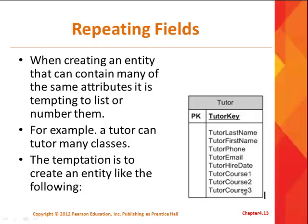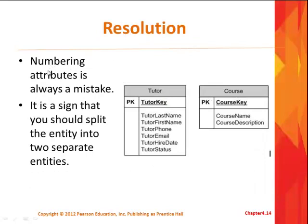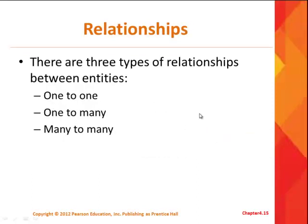It's tempting to do that, but let's say a tutor tutored in three courses — it might work for them. But what if they only tutored in one course? Then two fields would be null or blank, wasting space. Or what if a tutor could tutor in ten courses — would you add seven more attributes? That's not a good idea. Numbering attributes is always a mistake; it leads to bad design. Instead, you split it up — it's really a one-to-many relationship. You have your tutor information in the tutor entity, and your course information in a separate entity.